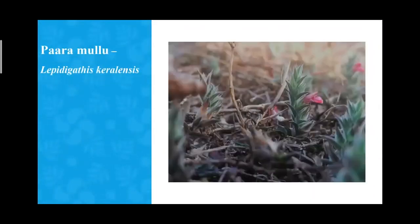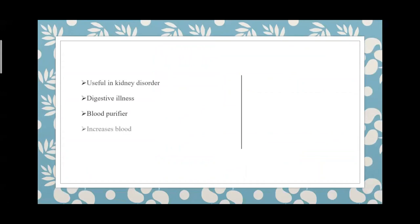The next plant is Paramilu — Peristrophe bicalyculata — very endemic to these ecosystems. It is considered for use in kidney disorders, is diuretic, and aids digestion and increases blood count. It is told to be used in bronchial asthma in children. It may have hot potency and is corrosive — a study shows corrosion even on steel — making it useful as a diuretic and lithiolytic drug.